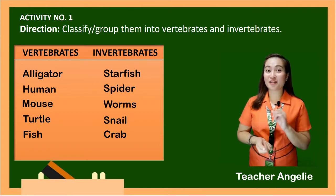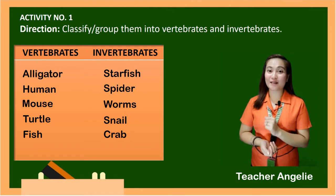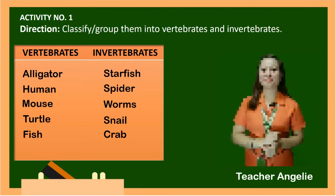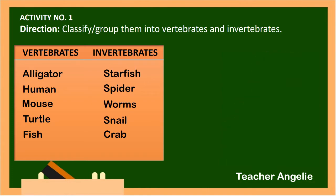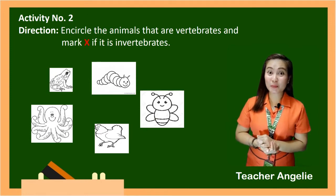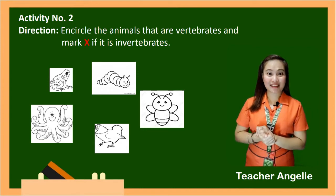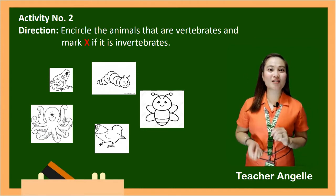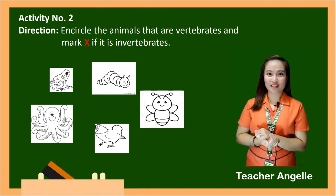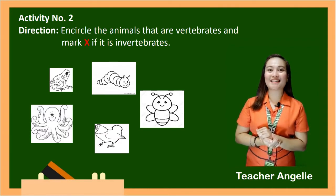Now that you already know how to classify animals into vertebrates and invertebrates, let's have your activity number 2. In your book, you can find activity number 2. The direction is: encircle the animals that are vertebrates and mark X if it is invertebrates. I will give you 5 minutes to answer it. Time starts now.